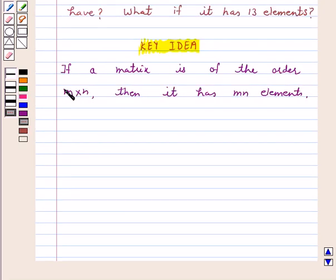We know that if a matrix is of the order m by n, then it has mn elements. This is the key idea behind this question. Let's start the solution.